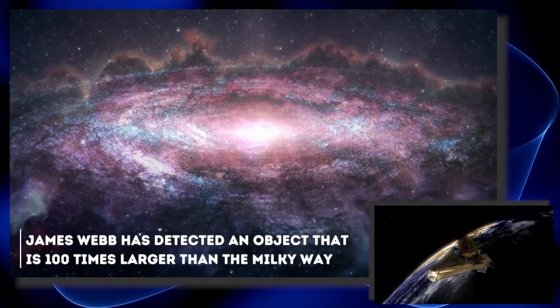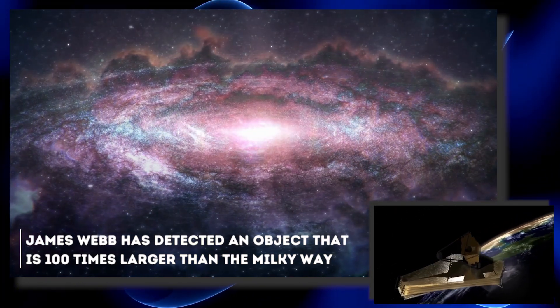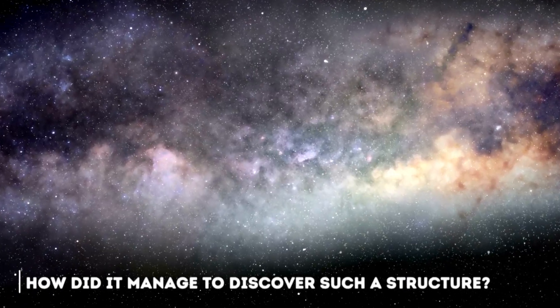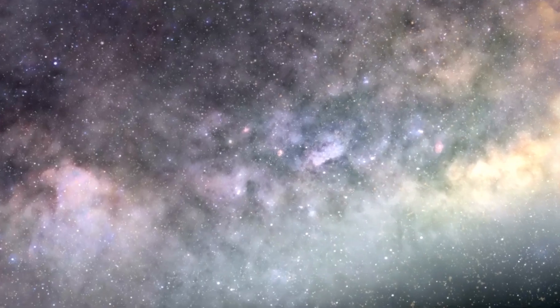Recently the James Webb has detected an object that is 100 times larger than the Milky Way. How did it manage to discover such a structure? And what does this mean for humanity?